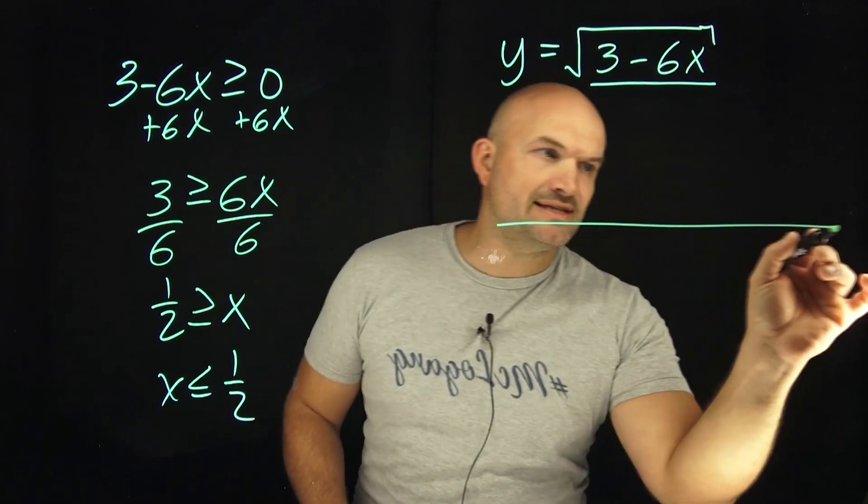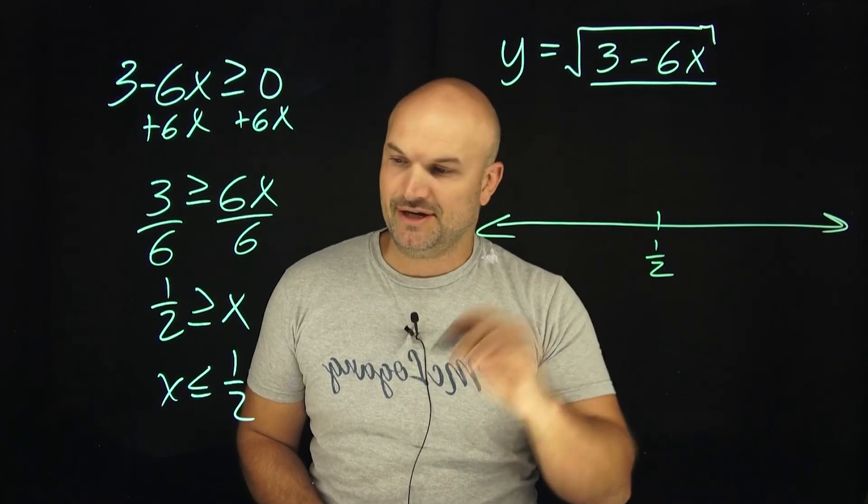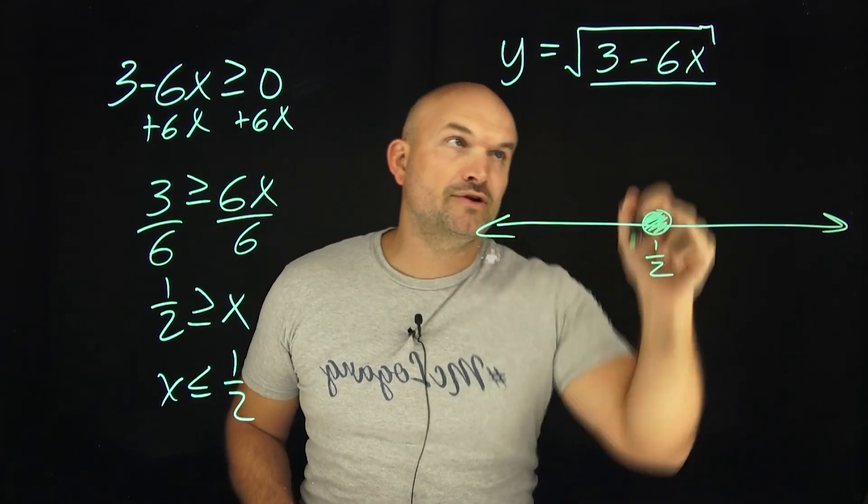Our domain here, we can go ahead and take a number line. I always like to write a number line when I'm trying to use interval notation. I'm going to put a nice little closed circle. Now again, this is less than or equal to, meaning that one half is included, right?